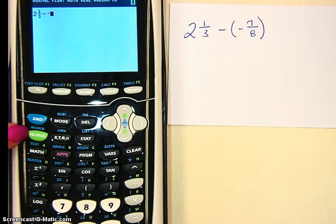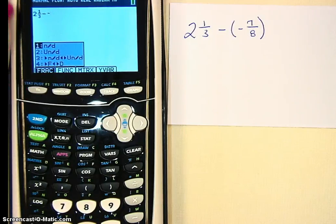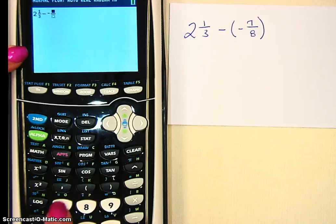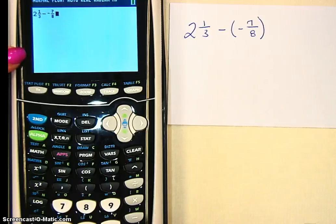I'm going to type in negative, and then once again I'm going to go to alpha, y equals. This time I want option 1 because it's not a mixed number. So that's what I'm going to choose. I'm going to put 7 over 8. Notice I'm always going to the right to get out of it.